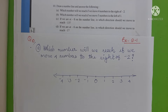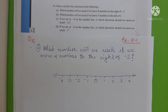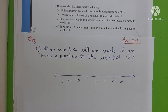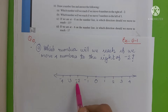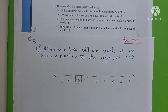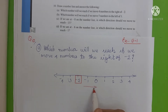So if we move 4 numbers to the right of minus 2, first we locate minus 2 on the number line. This is minus 2. The right side of minus 2 goes toward positive numbers, and the left side goes toward more negative numbers.